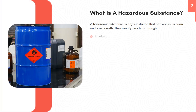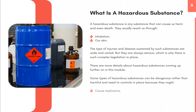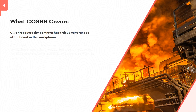What is a hazardous substance? A hazardous substance is any substance that can cause us harm and even death. They usually reach us through inhalation or our skin. The type of injuries and disease sustained by such substances are wide and varied, but they are always serious, which is why there is such complex legislation in place. Some types of hazardous substances can be dangerous rather than harmful and need controls in place because they might cause explosions, intensify or fuel a fire, or seriously damage nature or the environment.